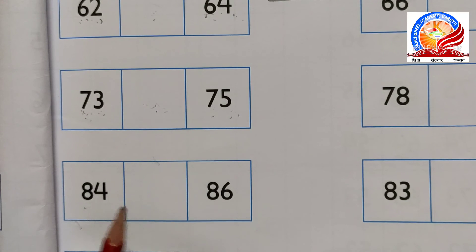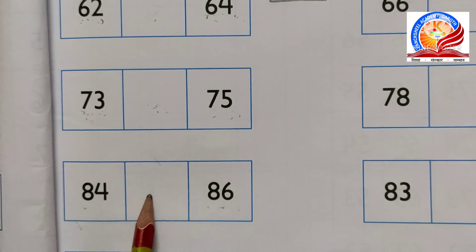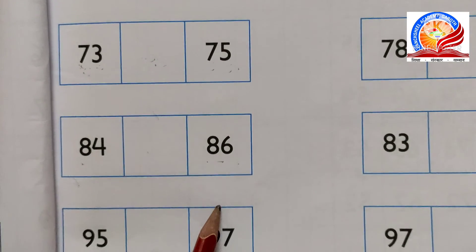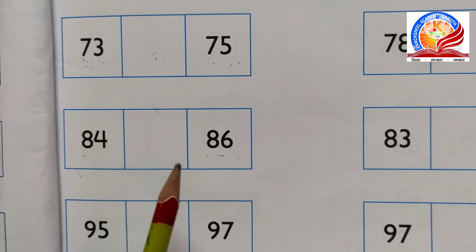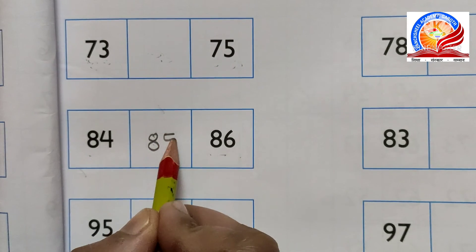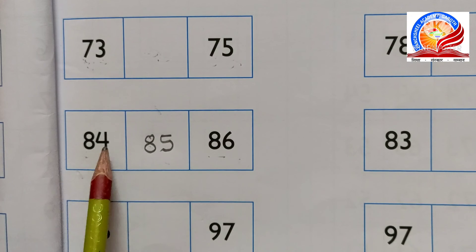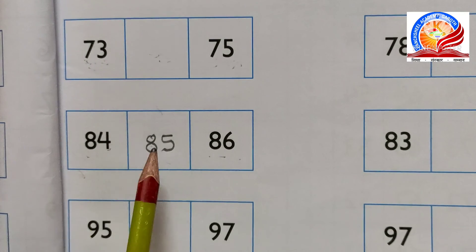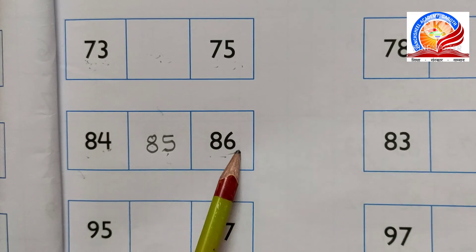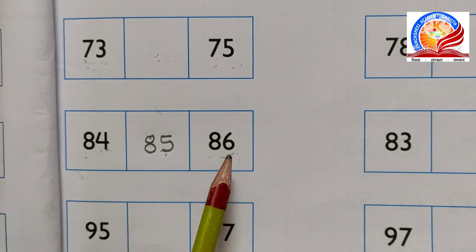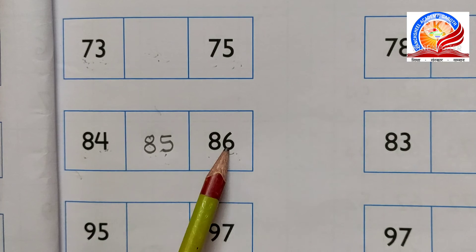Next, 84 and 86. 84 aur 86 ke beech mein kaun sa number aayega? Boliey: 81, 82, 83, 84, and 85. Aap yahan peechhe se bhi dekh sakte hain - 4, 5, 6. Aise hi 84, 85, 86. 85 is between 84 and 86.